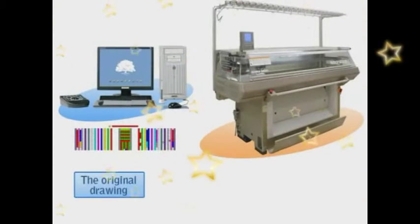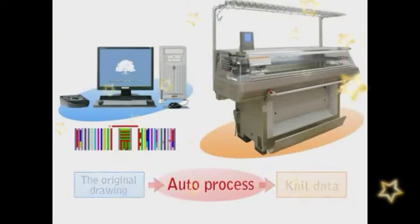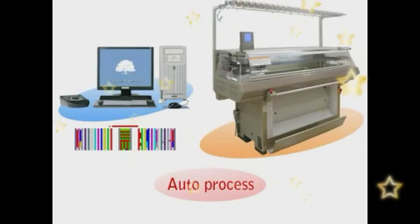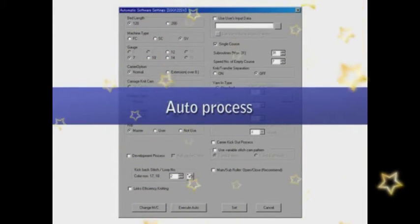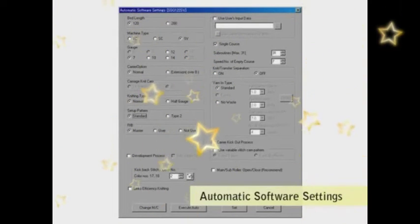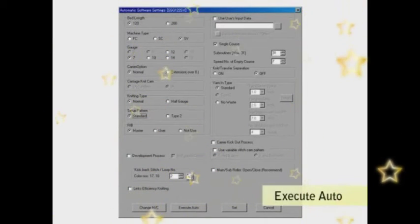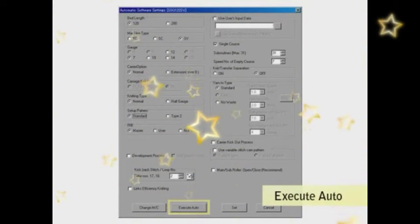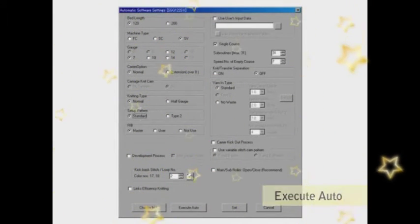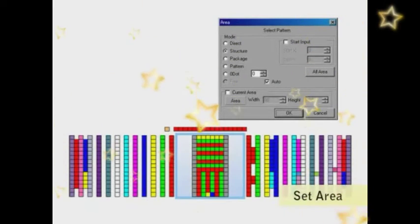The operation to convert the original drawing created with SDS-1 to knit data to be used on the knitting machine is called Auto Process. As for Auto Process procedure, first confirm automatic software settings and then click Execute Auto. Specify the structure pattern area by clicking the original drawing according to the area menu.